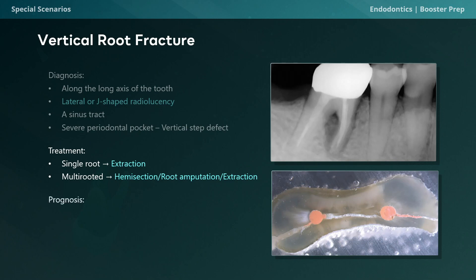VRF carries a hopeless prognosis. When you see it, it's time to start thinking of ways to replace the tooth rather than save it. Remember these two cases — Cracked Tooth Syndrome and Vertical Root Fracture — as they can certainly show up on your examination and, more importantly, in clinical practice. See you next time.